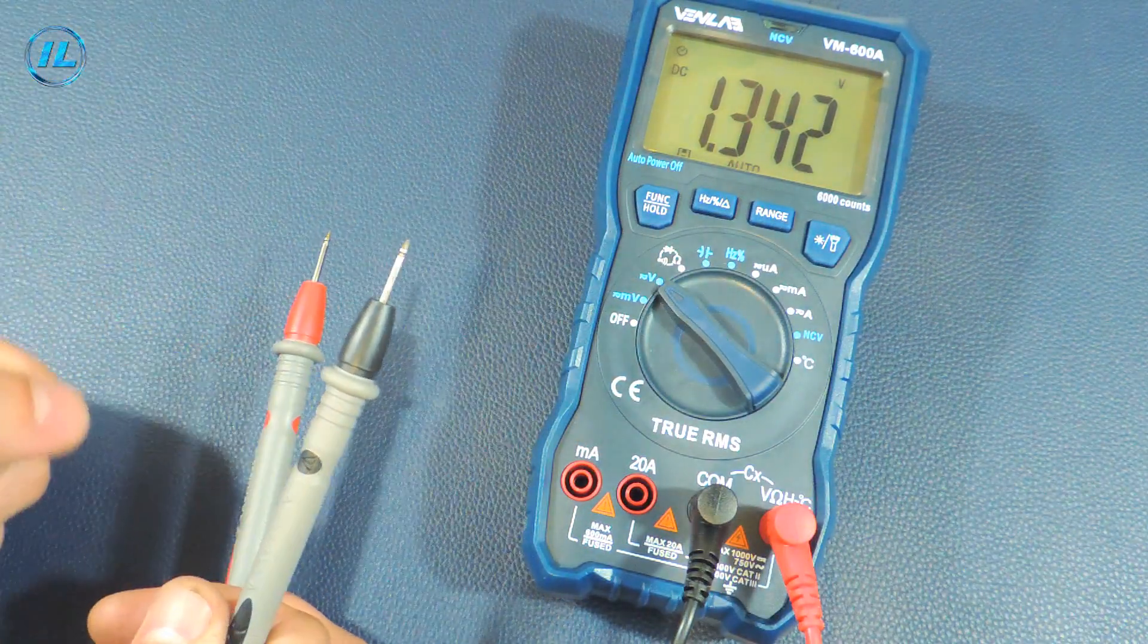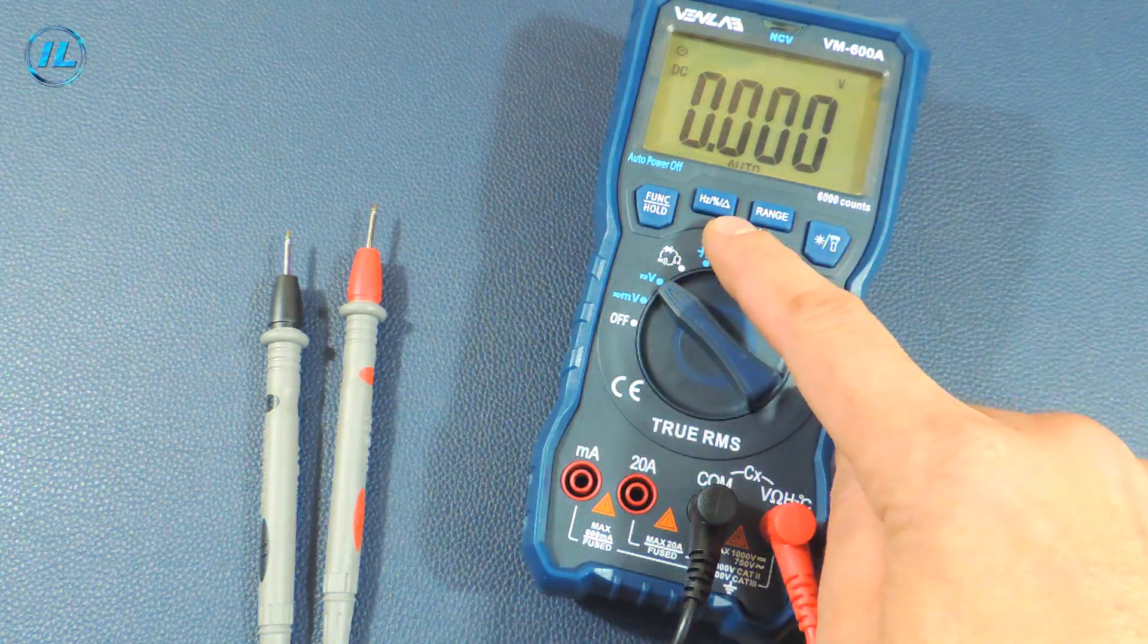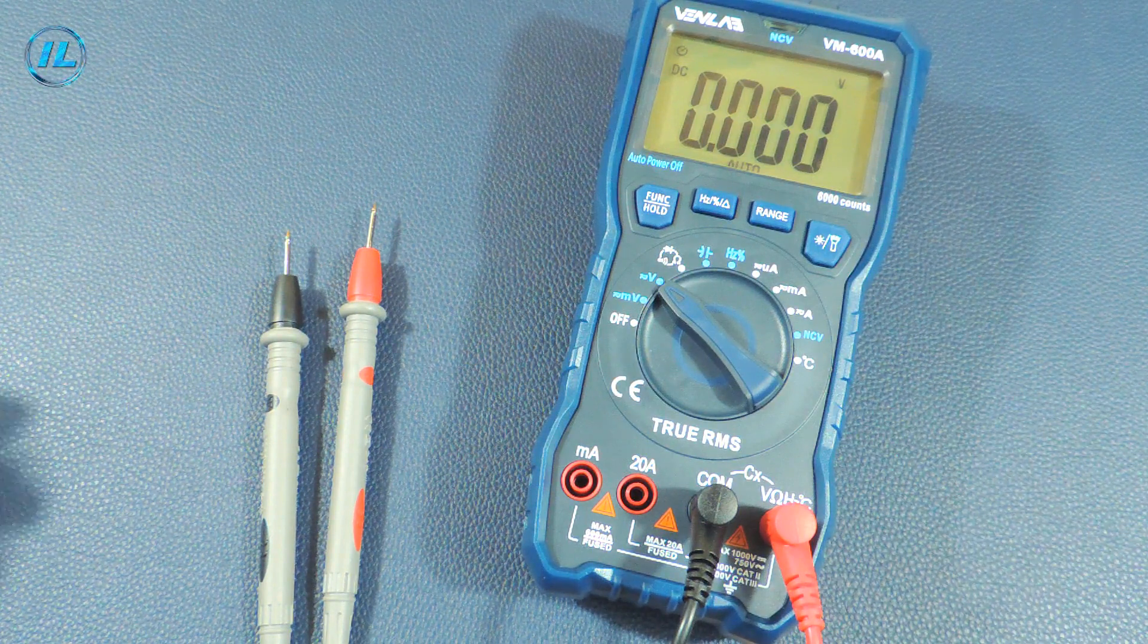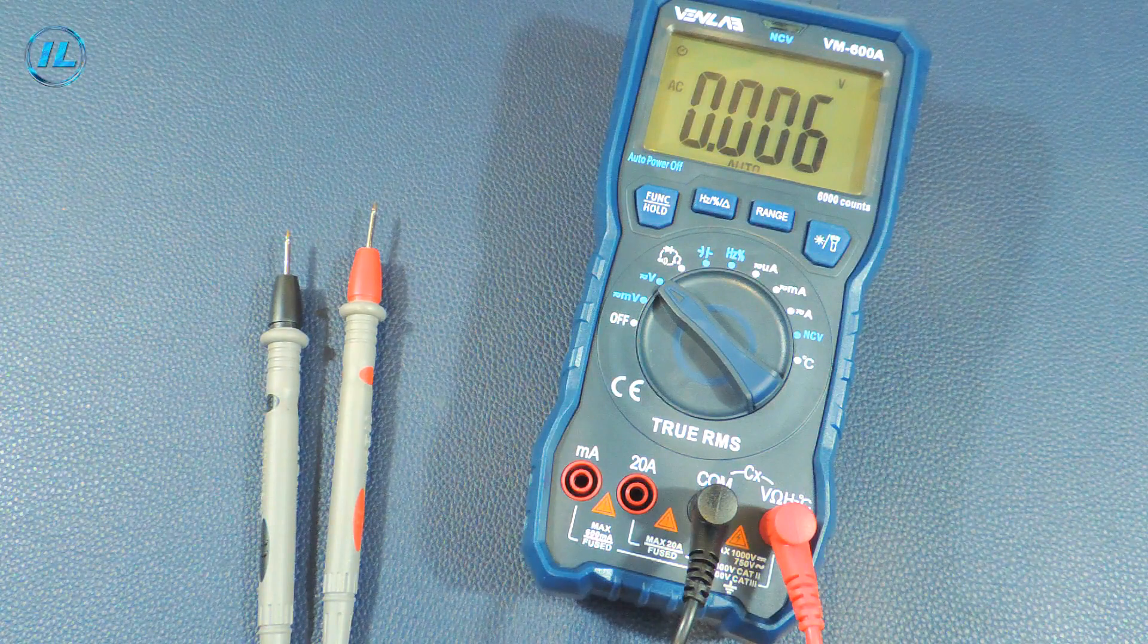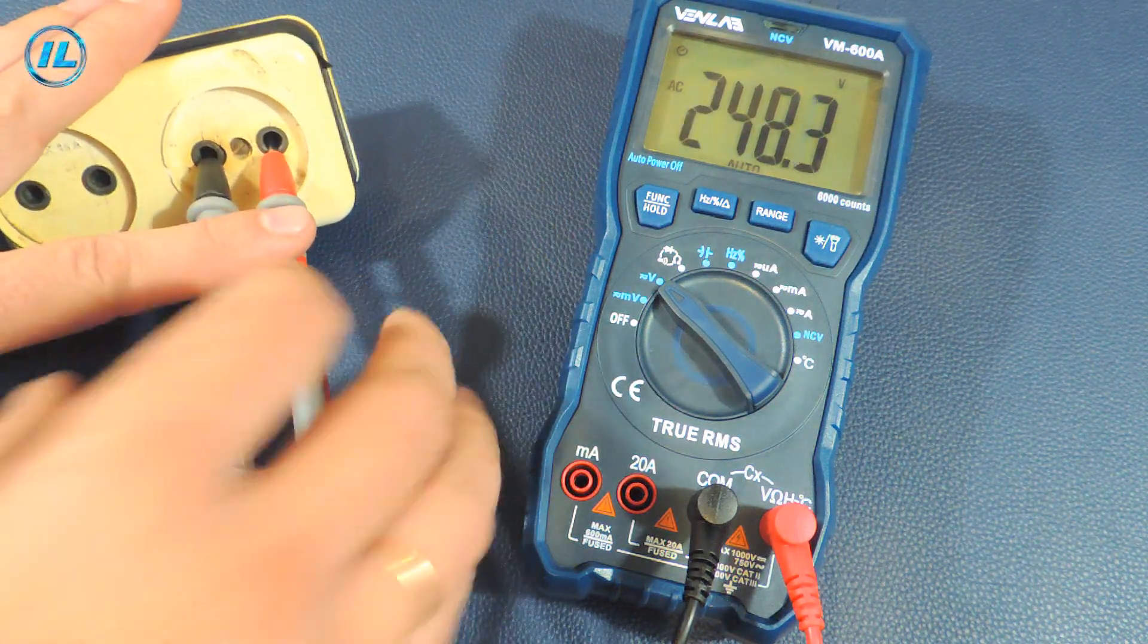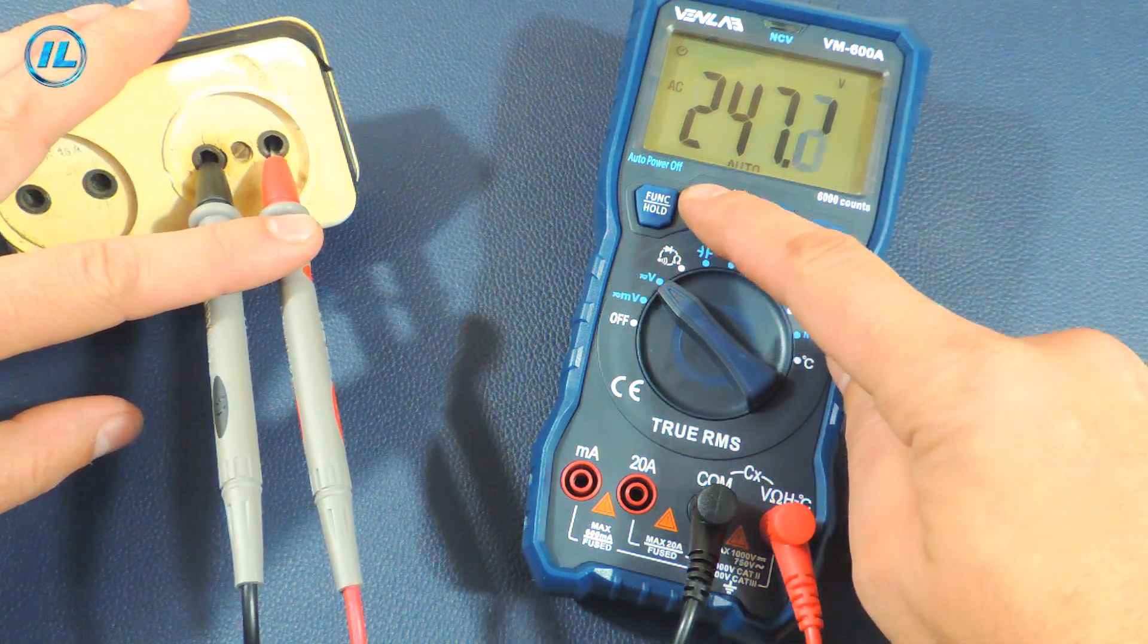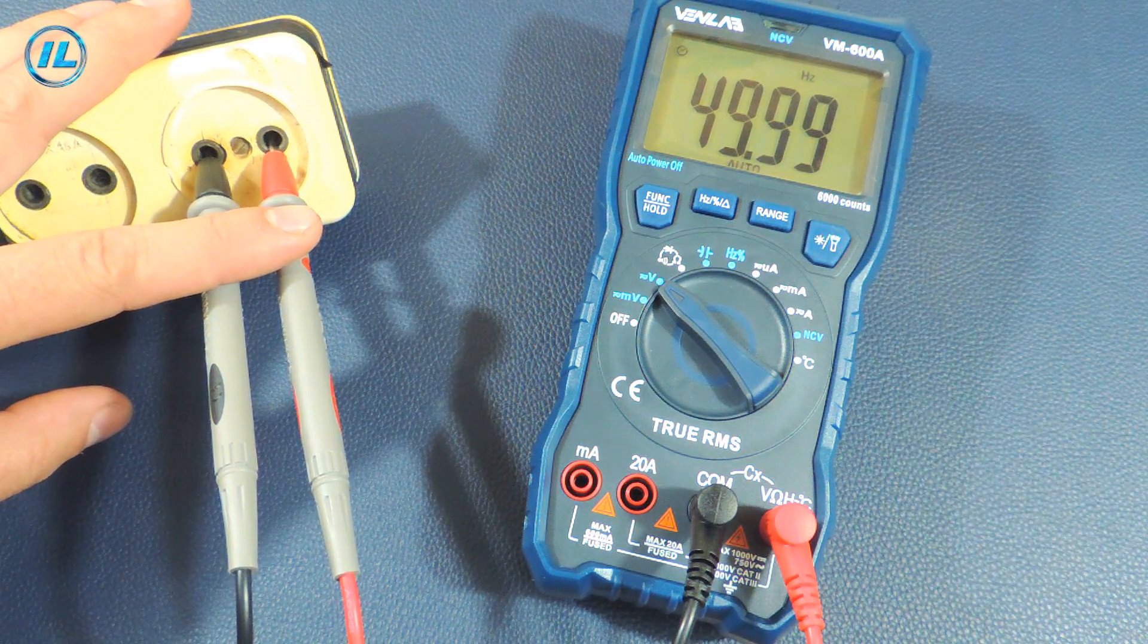The value remained on the screen. The next button allows you to measure the frequency in the voltage measurement mode. How does it work? Let's choose the measurement of alternating voltage. The mains voltage is 247 volts. Now when the button is pressed the multimeter immediately shows a frequency of 50 hertz. Very convenient function.